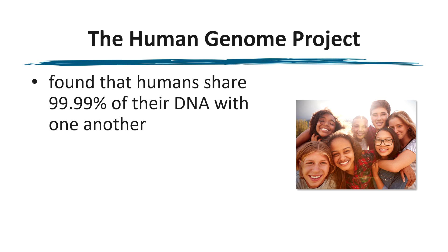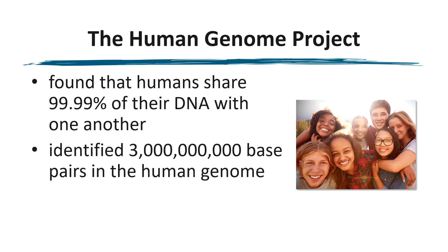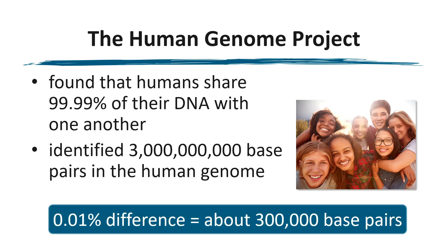In their study, scientists found that the genomes of any two different people share 99.99% of the exact same information. However, when your book says that the DNA of two people is 99.99% the same, it would be good to give this number some mathematical context. The human genome contains about 3 billion base pairs, so a 0.01% difference adds up to about 300,000 base pairs, which is still a huge difference.